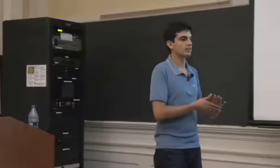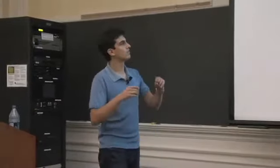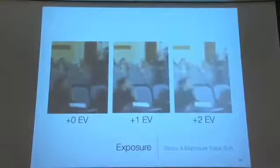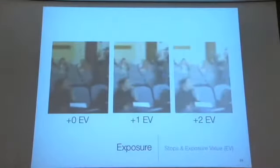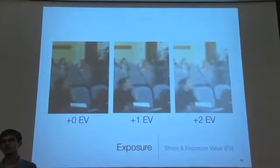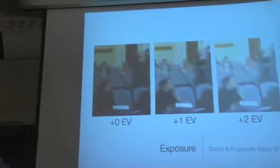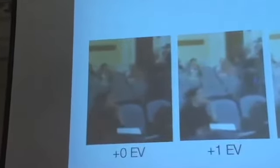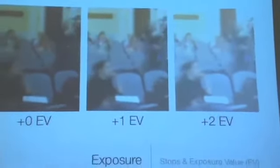And we have this concept of EV, or exposure value, where we measure how bright something is in relative terms by using a term called stop. So when we are talking about one stop brighter or one stop darker, we are talking about literally halving or doubling the amount of light and therefore the number of photons that are in the scene.